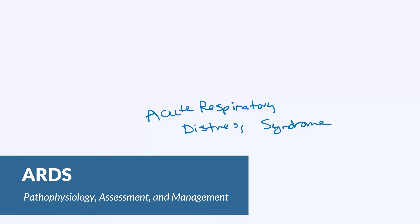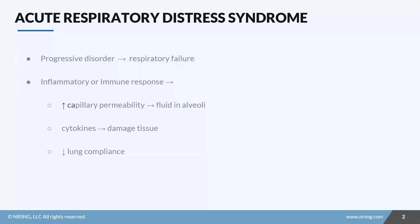This is near and dear to my heart because a close friend's father passed away from this. You can read more about his story in the case study attached to this lesson, so be sure to check that out. So what is Acute Respiratory Distress Syndrome? In short, it is a progressive disorder that prevents appropriate gas exchange and leads to respiratory failure.